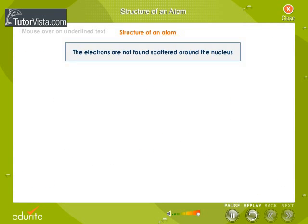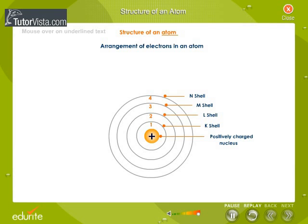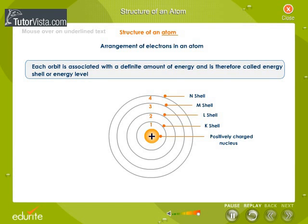The electrons are not found scattered around the nucleus. They are arranged in different shells around the nucleus. Each orbit is associated with a definite amount of energy and is therefore called an energy shell or energy level. These energy levels are numbered starting from the nucleus outward.